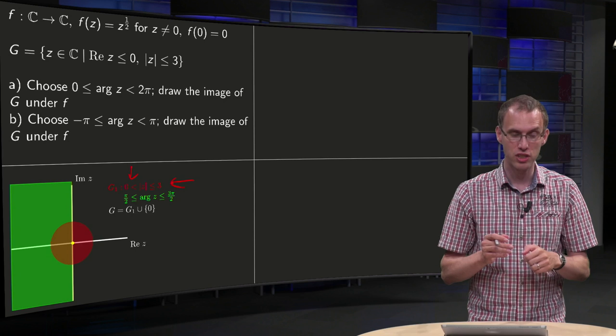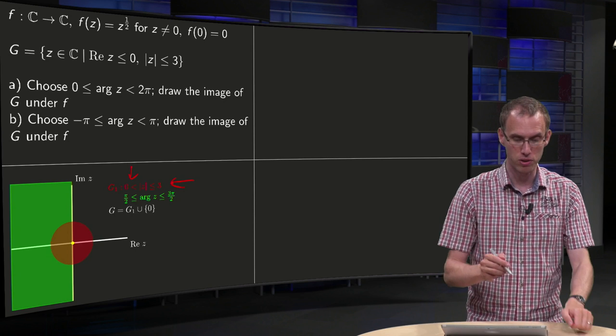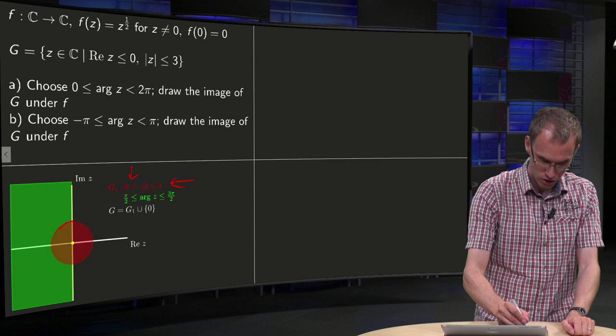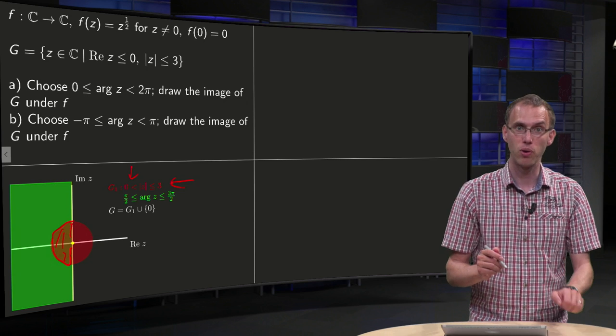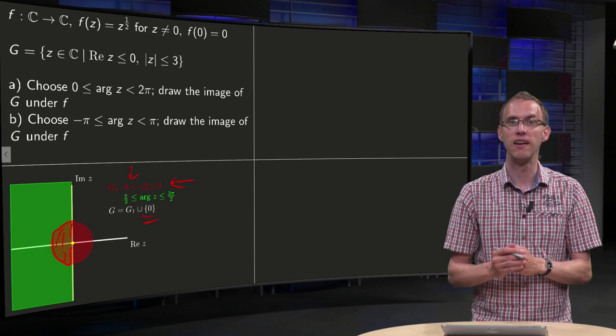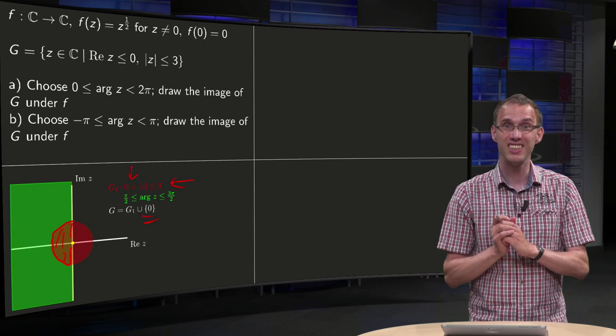So G is where they intersect, so the intersection of the green region with the red circle. So that's this semicircle over here, including its boundary, that's what we will call G1 and then zero separately. That's about the region G.